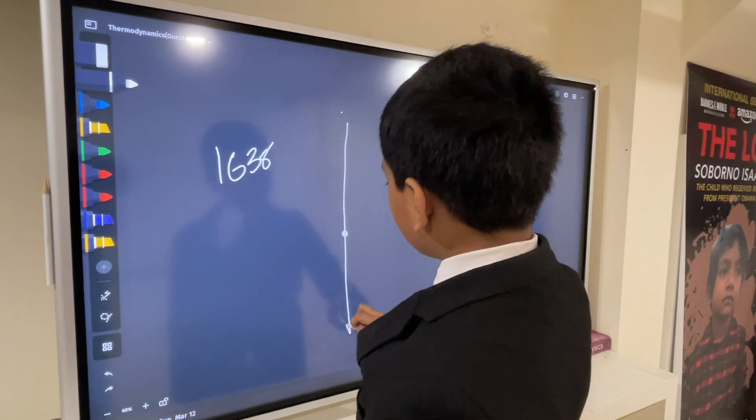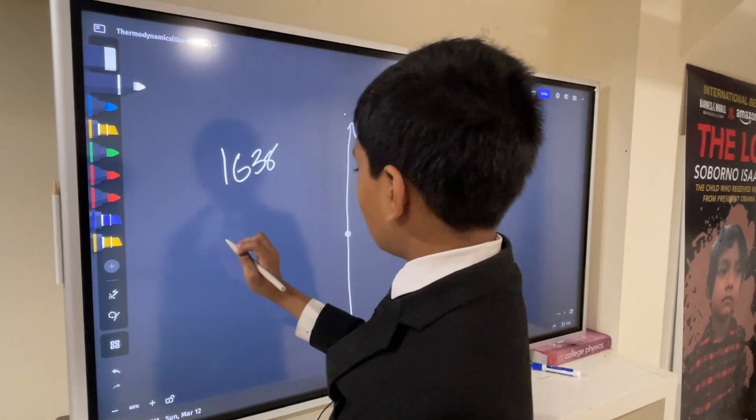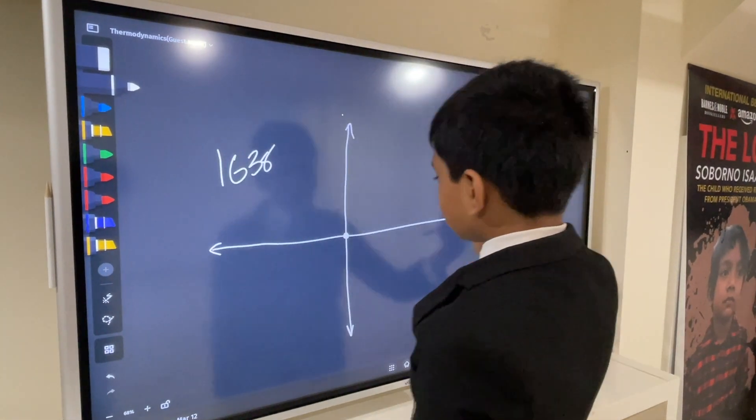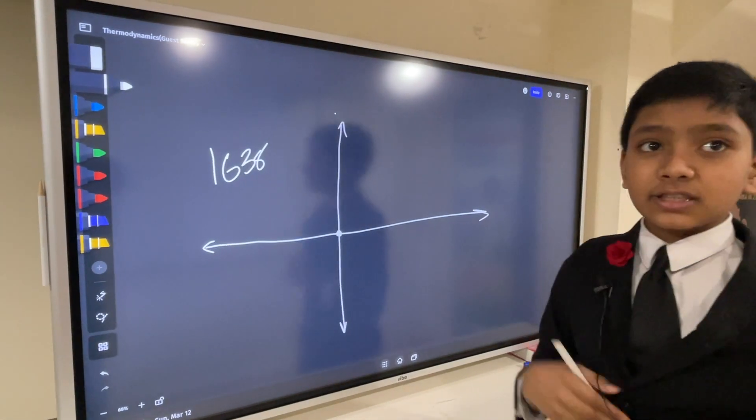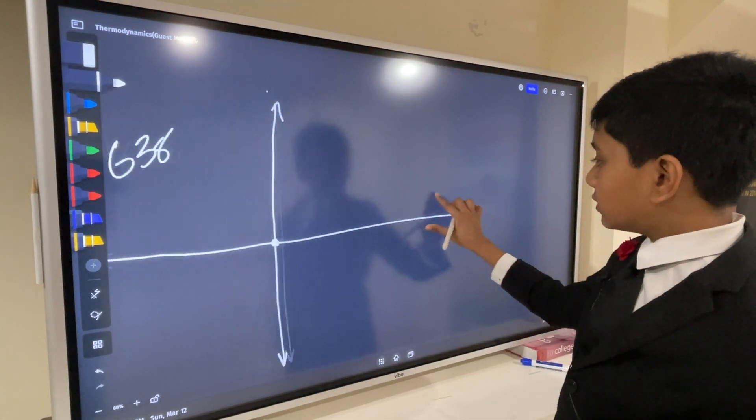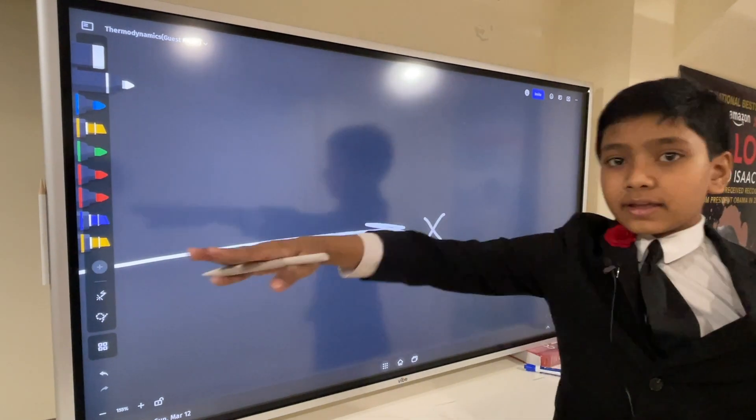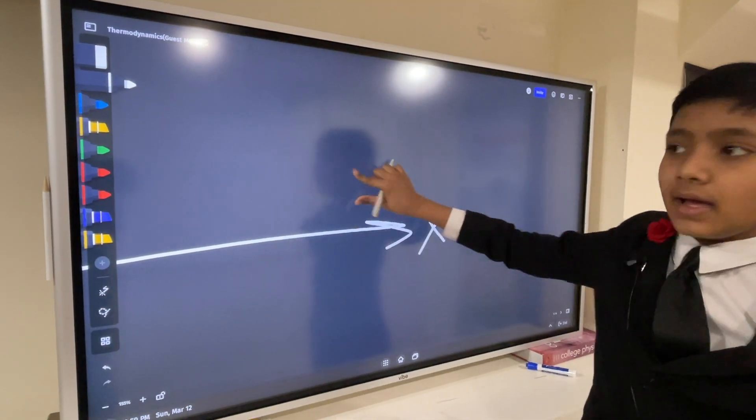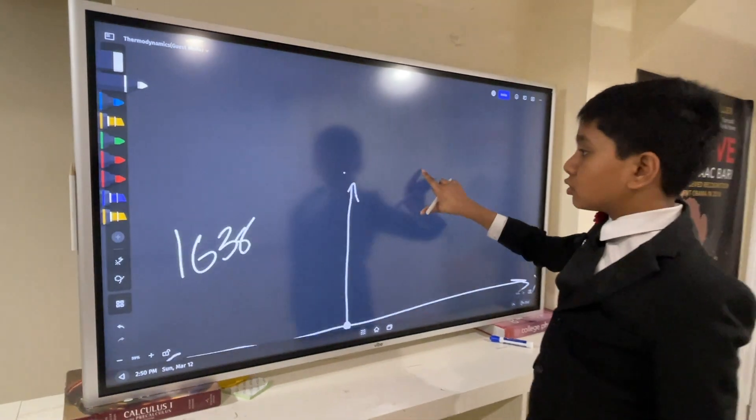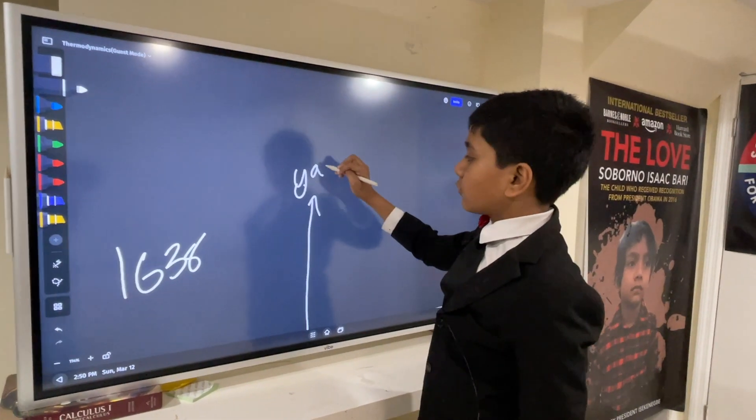So, let's just draw this. This is the Coordinate Plane. This is what we call the x-axis, it's basically horizontal, and this is what we call the y-axis, it's vertical.